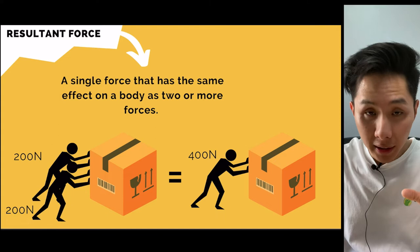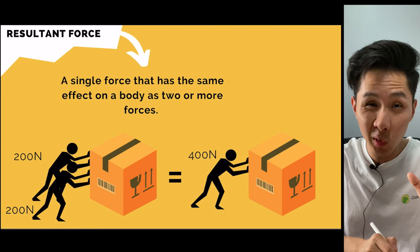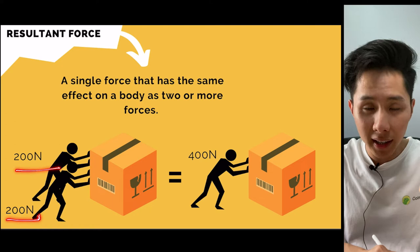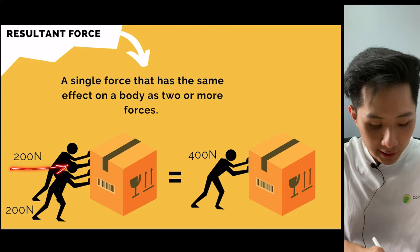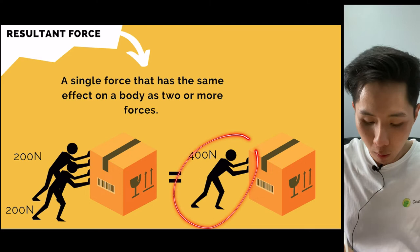Now let's understand what Newton meant by resultant force. In this example, two people are pushing a box, each exerting 200 Newton. The resultant force is the sum of multiple forces. Since both 200 Newton forces act in the same direction to the right, the resultant force is 400 Newton towards the right — like one person exerting 400 Newton.